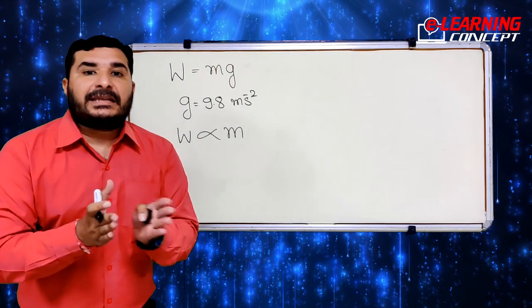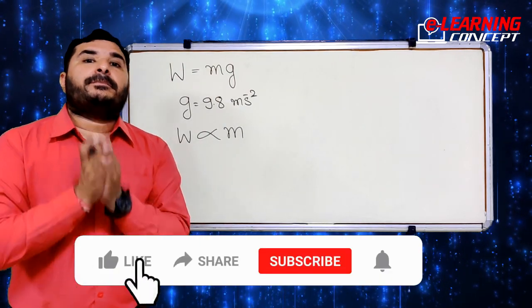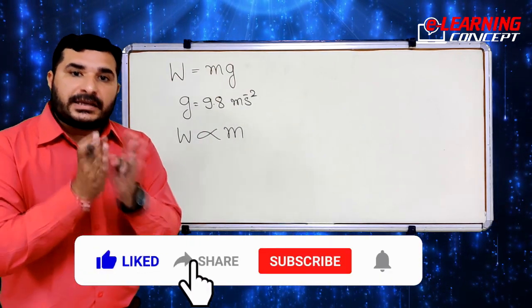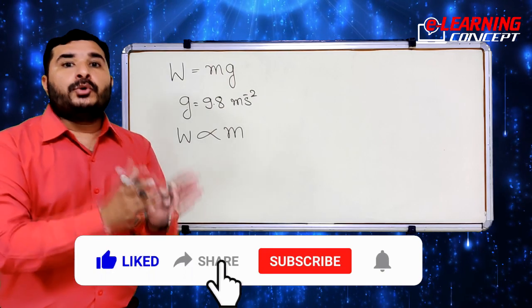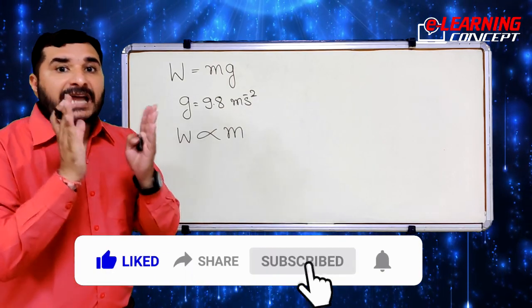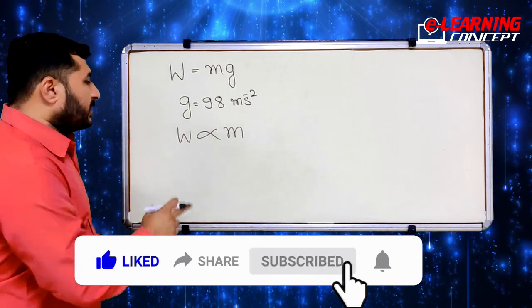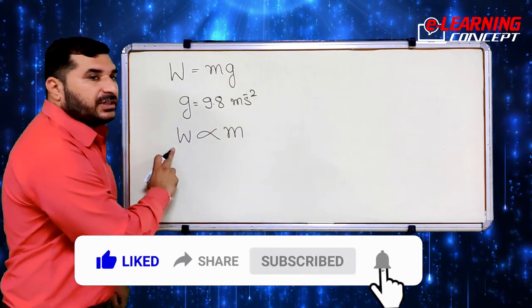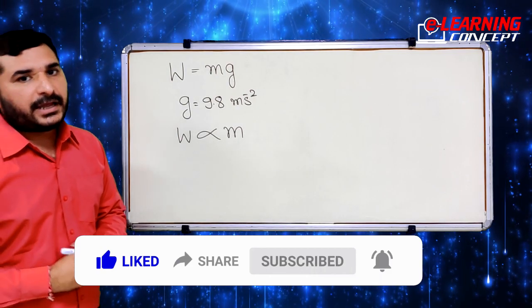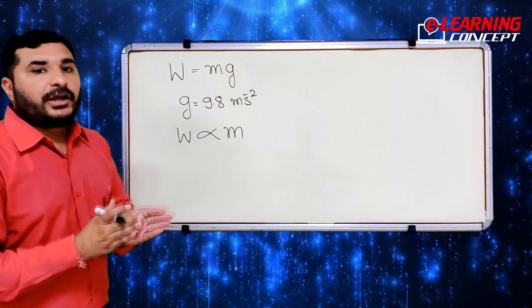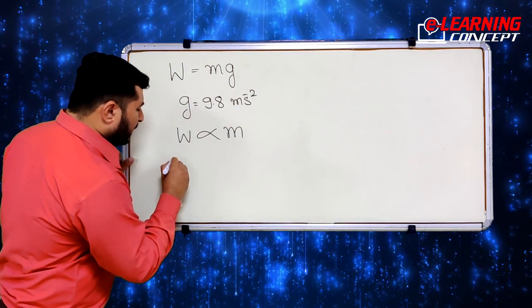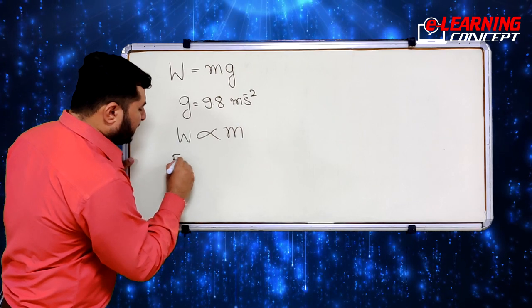Today we are going to discuss and compare weight with respect to mass for the Moon and the Earth. This gravitational force can be derived using Newton's Law of Gravitation, whose formula is F = GM m / r².